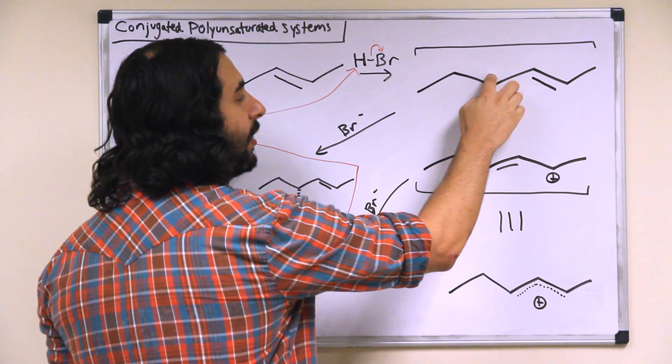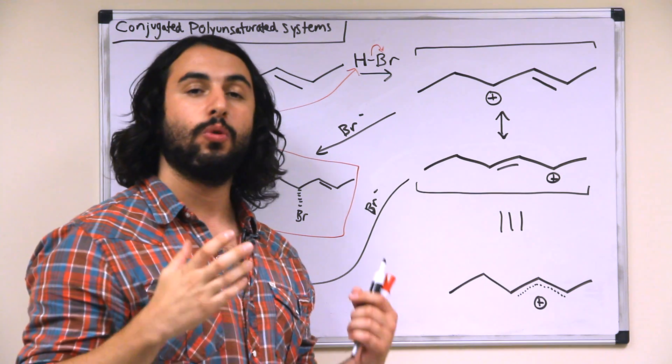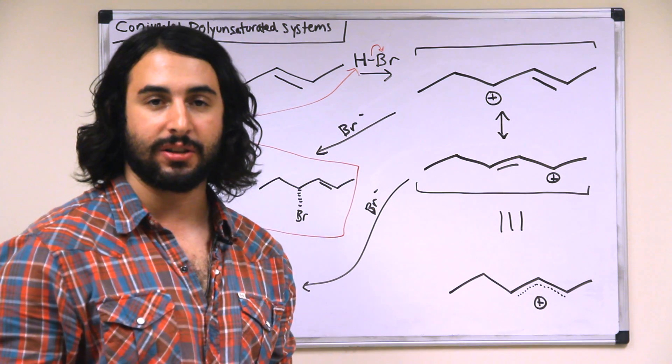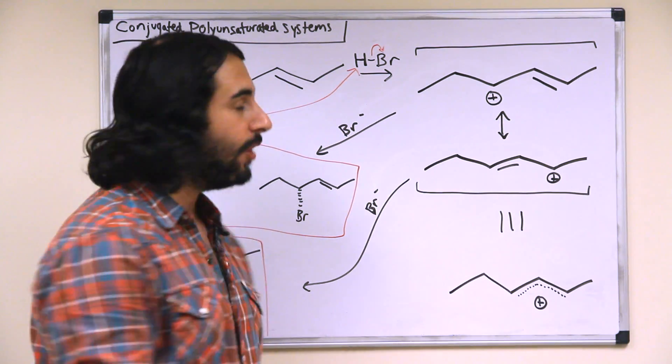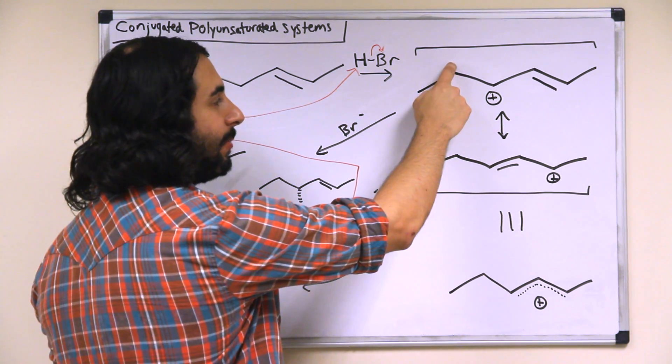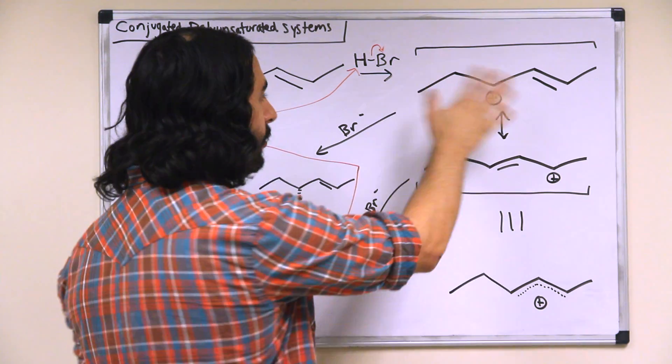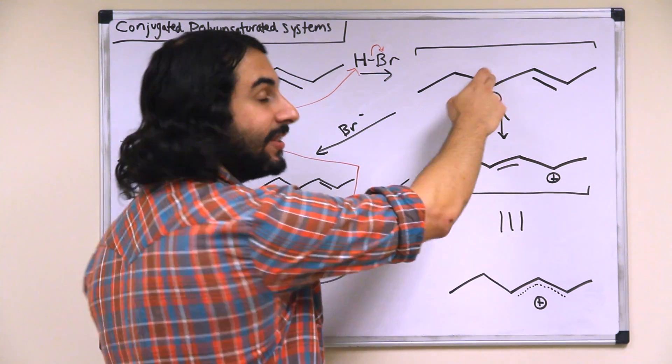It's exclusively going to go to this carbon because this is the position that will be resonance stabilized by the other pi bond. Resonance stabilization is going to bring the energy of the system down, so that is going to be preferred. Whereas this position is not resonance stabilized because this pi electron density is just too far away to interact, this will be, and so it is exclusively going to go there.